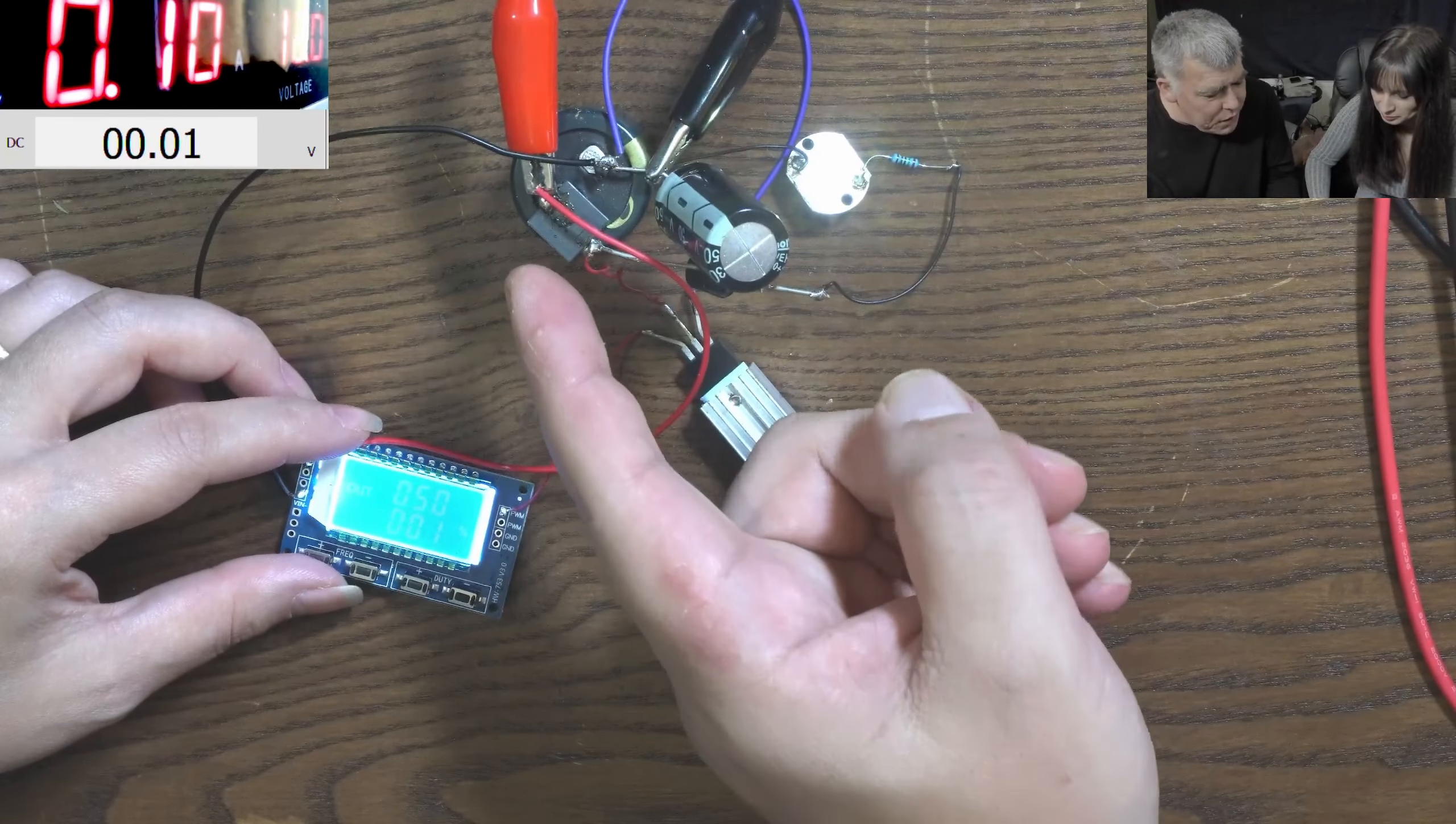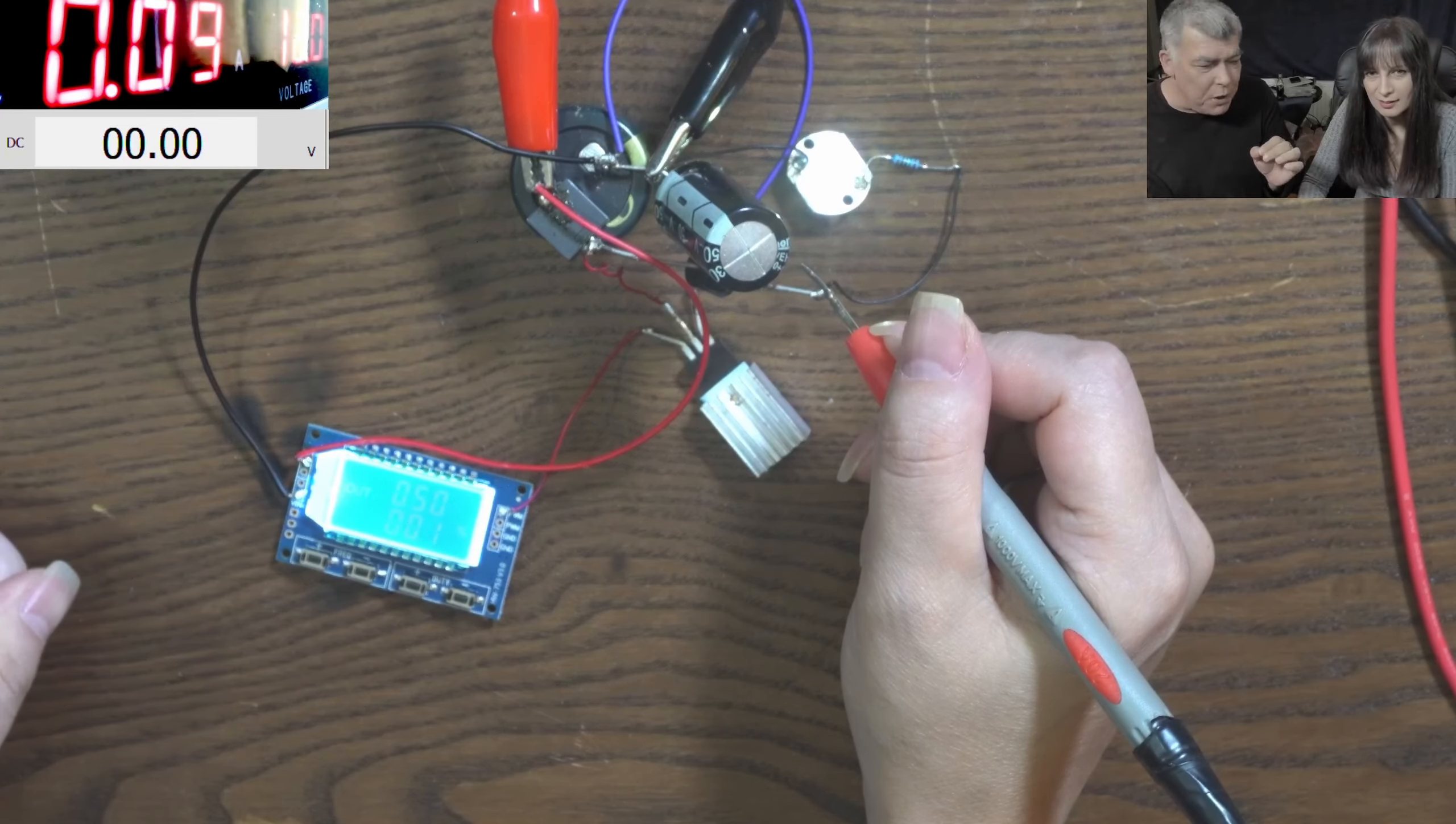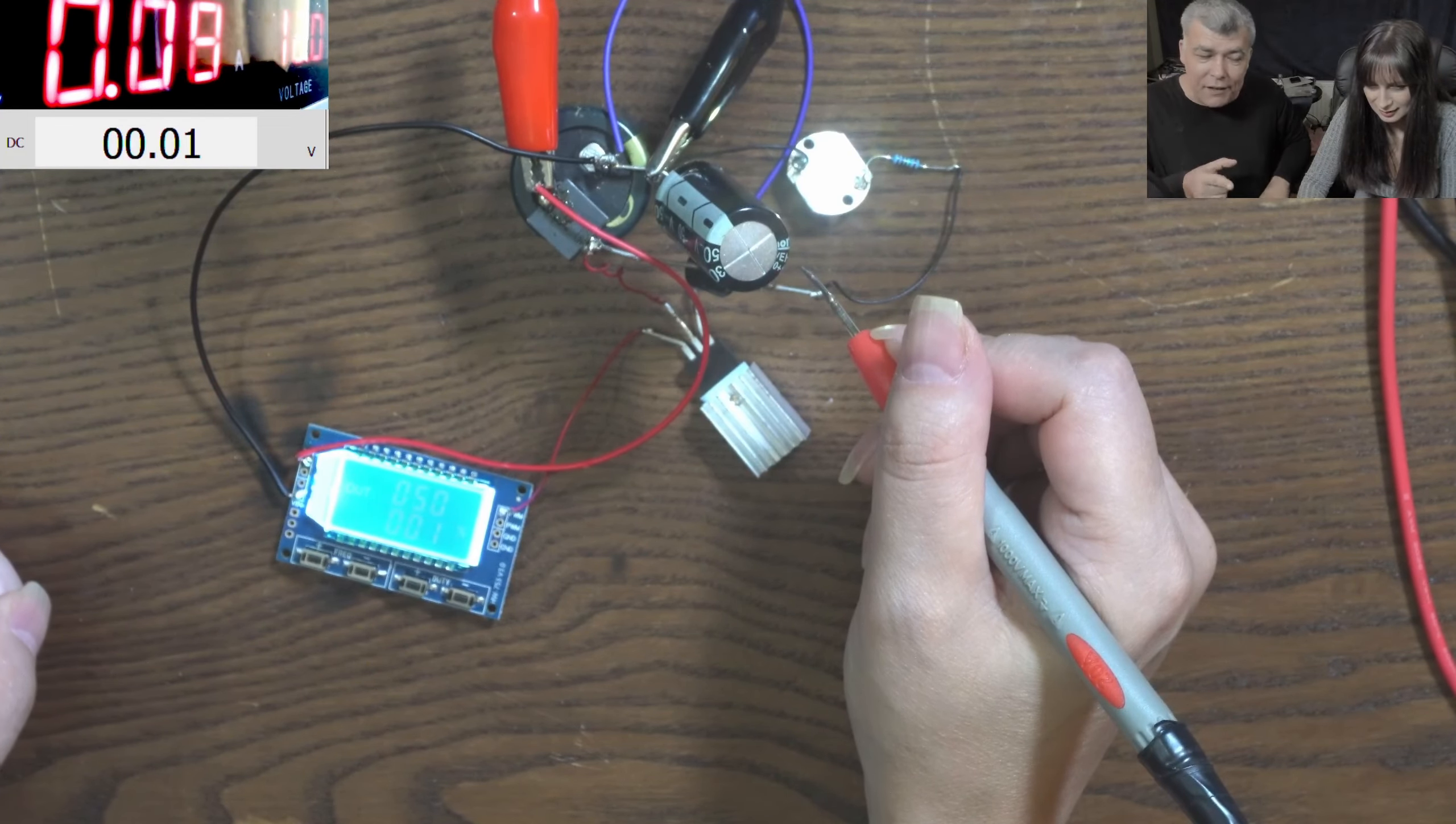Now I'm pretty sure 150 kilohertz, which is maximum on this one, is not the best efficiency point for this circuit. So I'm going to give you a task. I want to jump the frequency and try to find the best efficiency for this circuit. Lower the duty cycle to zero.